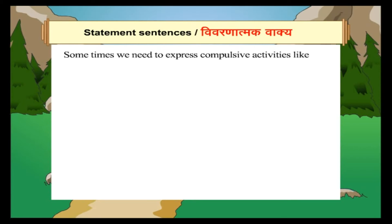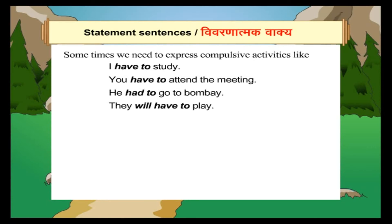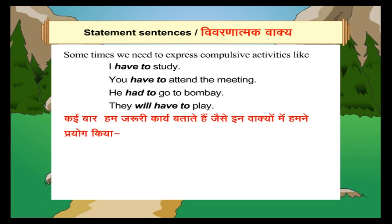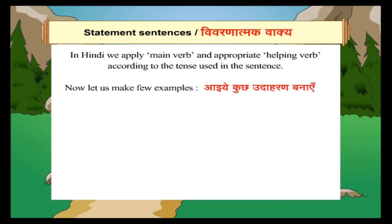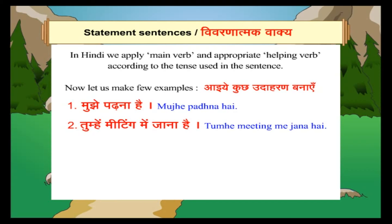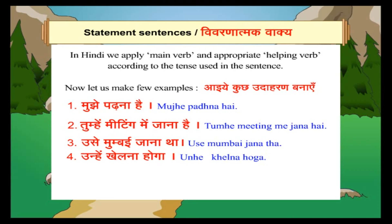Sometimes we need to express compulsive activities, like: I have to study. You have to attend the meeting. He had to go to Bombay. They will have to play. (कई बार हम जरूरी कार्य बताते हैं।) In Hindi, we use the main verb with a helping verb. The helping verb changes according to tense — है (present), था (past), होगा (future). Examples: मुझे पढ़ना है। तुम्हें मीटिंग में जाना है। उसे मुंबई जाना था। उन्हें खेलना होगा।